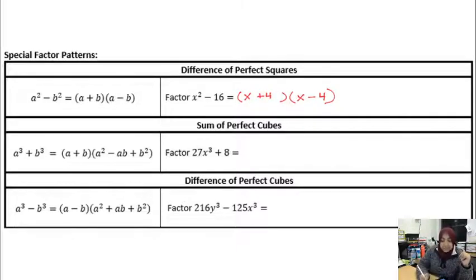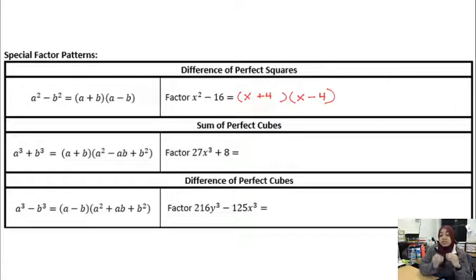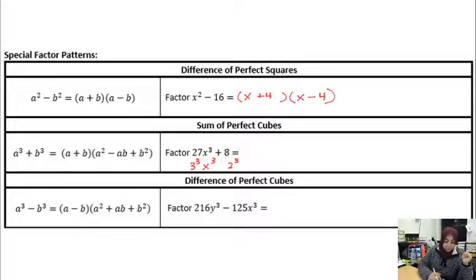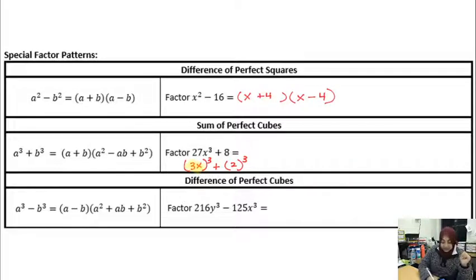Next are the sum and difference of perfect cubes — again, just formulas. I know 27x³ + 8 is a sum of perfect cubes because 27 is a perfect cube (3³ = 27), x³ is a perfect cube, and 8 is a perfect cube (2³ = 8). These are things you should know. Now, the whole expression 3x is being cubed, and 2 is being cubed separately, so 3x is my A value and 2 is my B value.